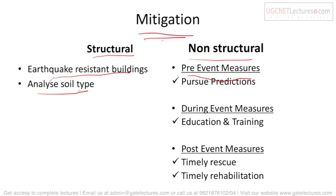Now let's talk about mitigations — mitigation means preventive measures. We can take precautions to reduce their impact. Normally, natural disasters cannot be stopped in advance, but we can take measures to reduce their after-effects. Though we cannot stop natural earthquakes, we can reduce their impact somewhat.